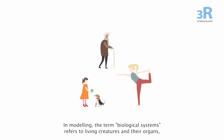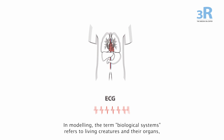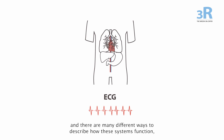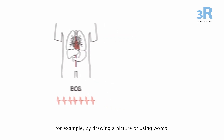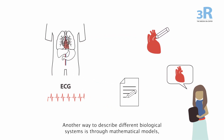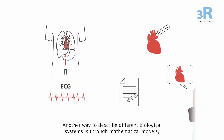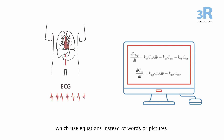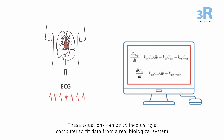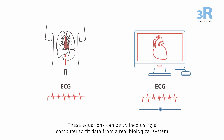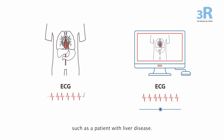In modelling, the term biological systems refers to living creatures and their organs, and there are many different ways to describe how these systems function, for example by drawing a picture or using words. Another way to describe different biological systems is through mathematical models, which use equations instead of words or pictures. These equations can be trained using a computer to fit data from a real biological system, such as a patient with liver disease.